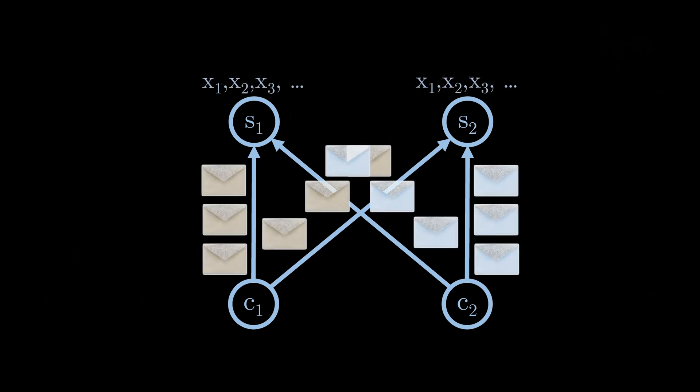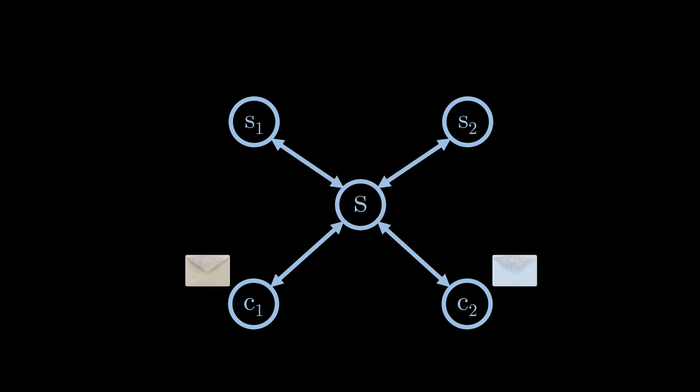This problem is exactly the state replication problem we are trying to solve. Multiple clients send multiple commands to the servers and the servers need to ensure that they all update their local state in a consistent manner. A straightforward solution is to introduce a serializer, a centralized component that collects commands, orders them, and sends them to the servers in that order.